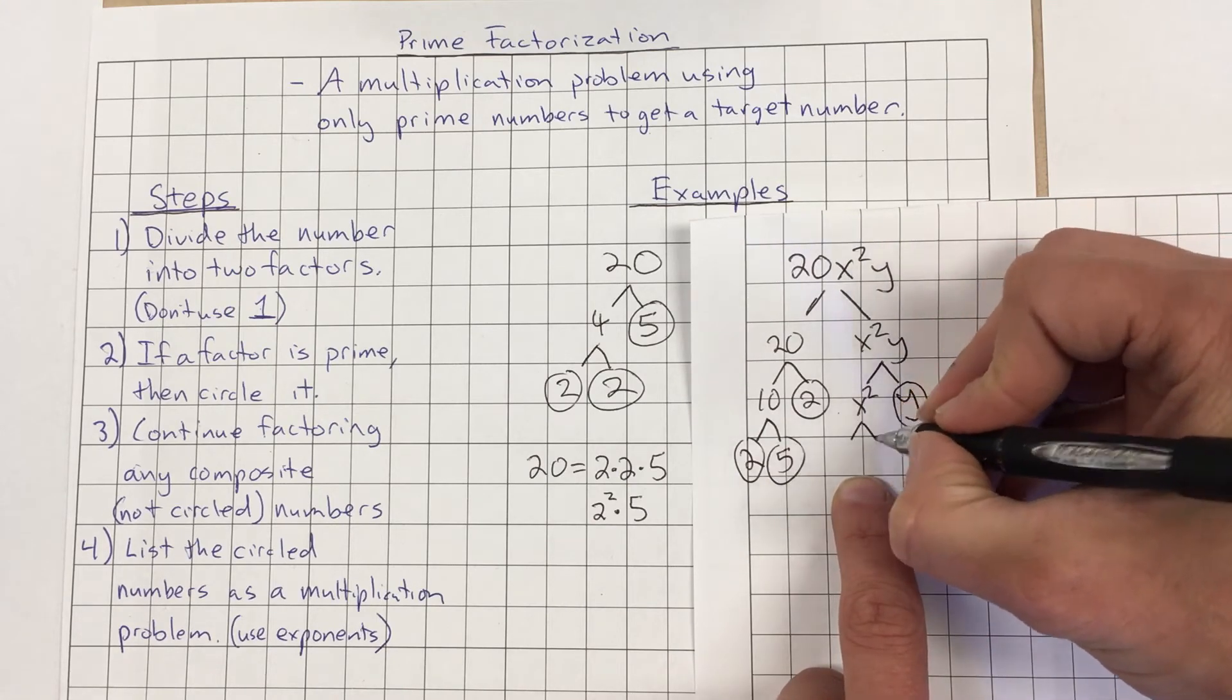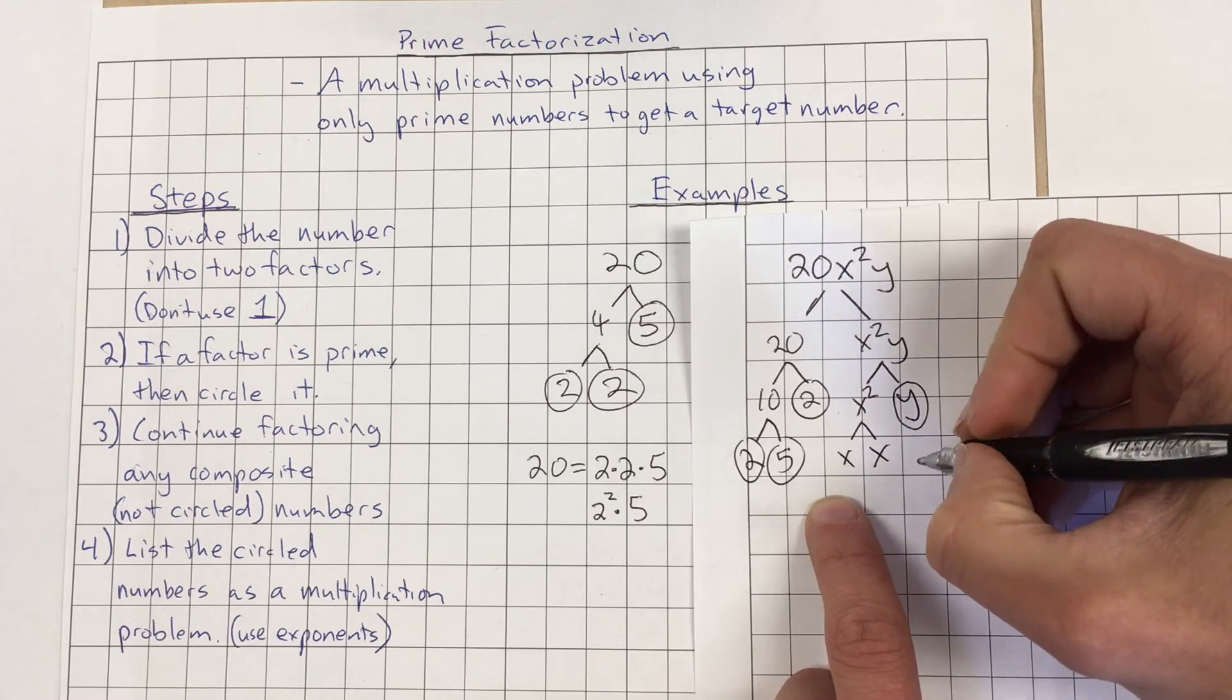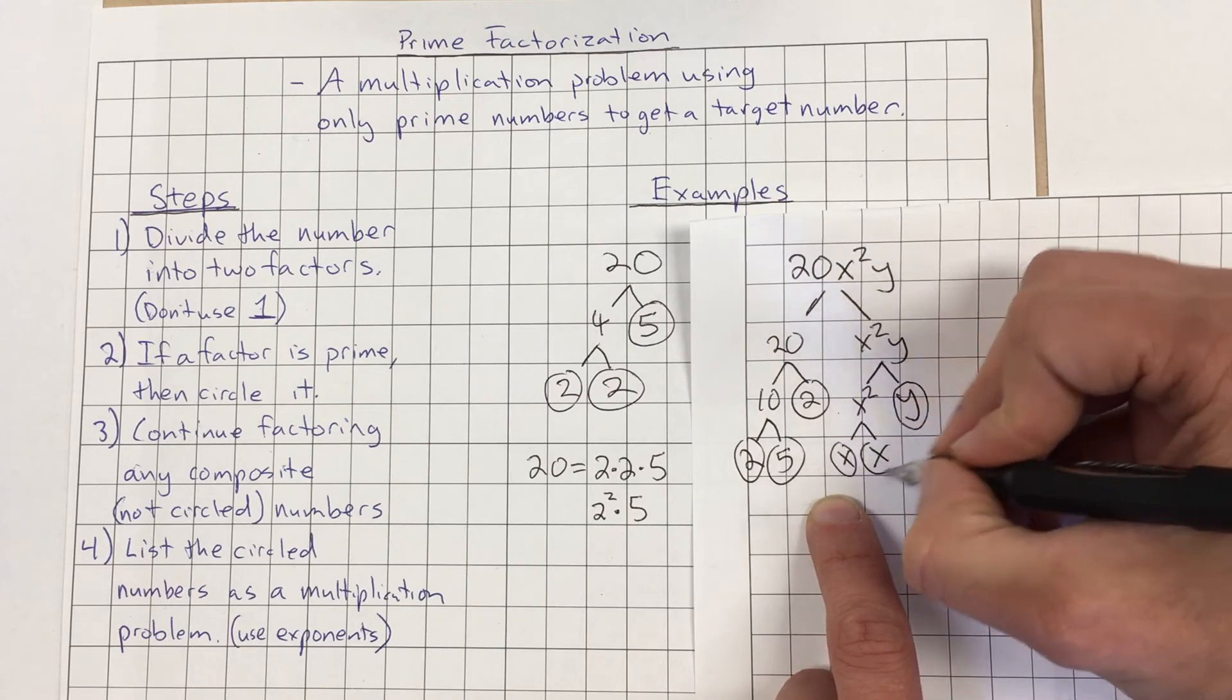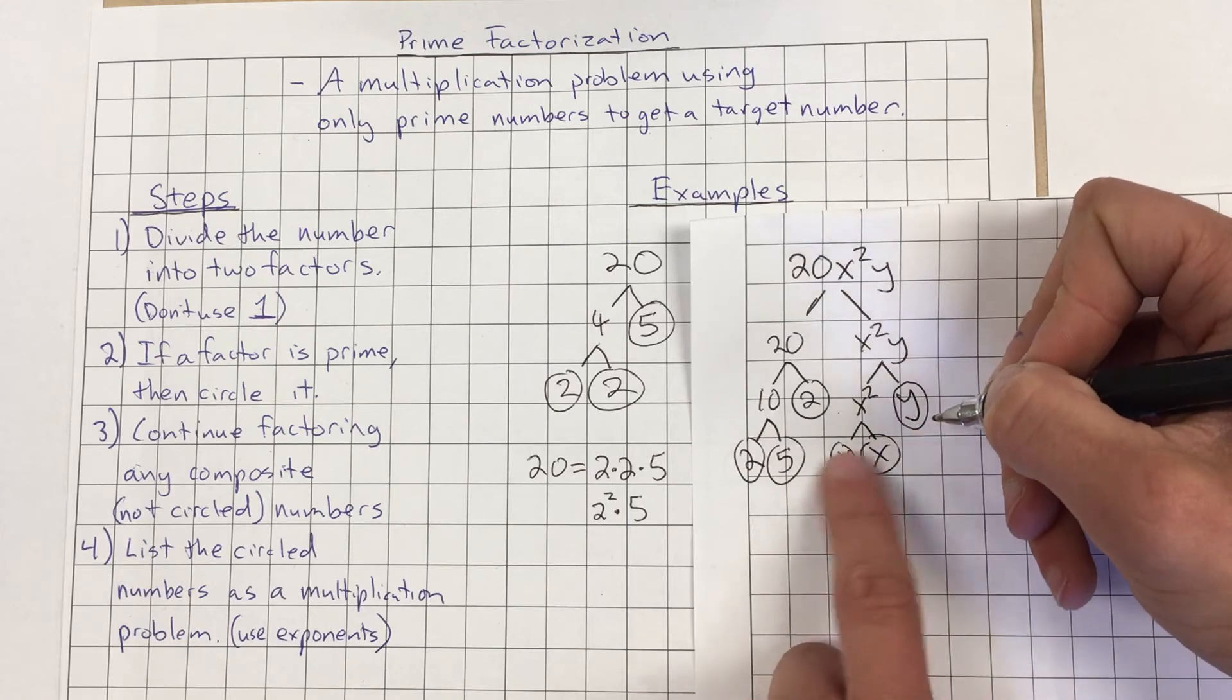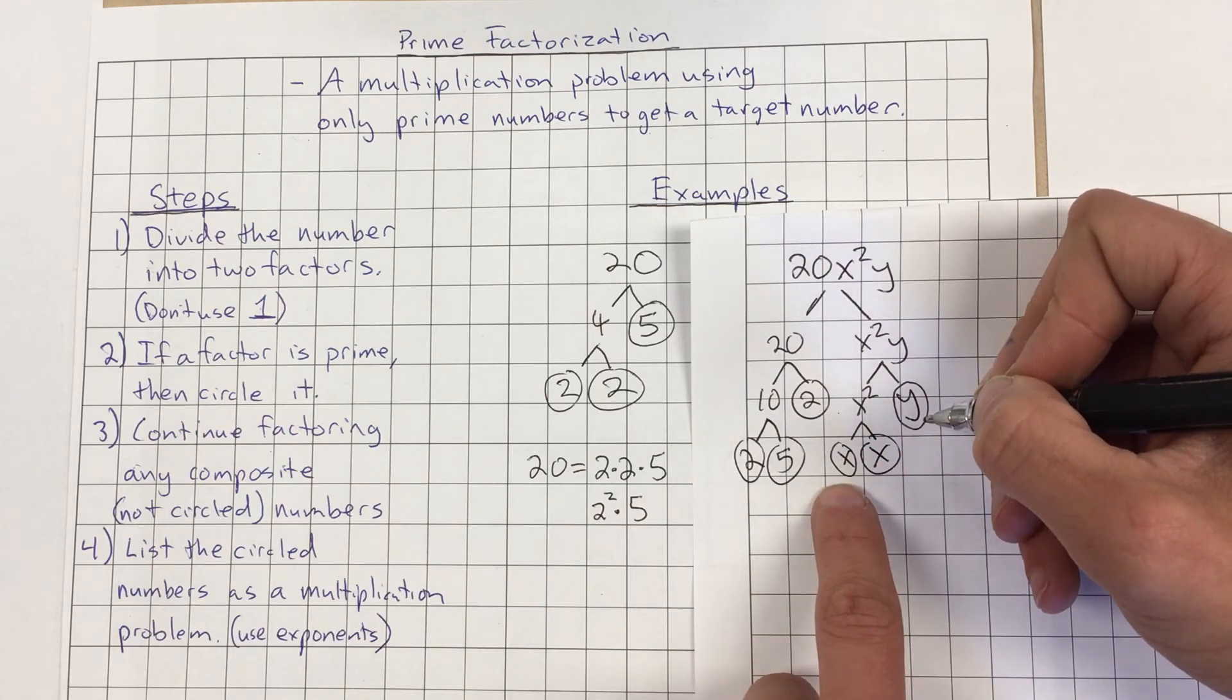x squared we could factor into x and x because x times x equals x squared, but I can't factor the x's anymore, so I'm going to circle those. So we don't know if they're prime, so they don't really fit this process, but it is as far as we can factor them.